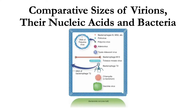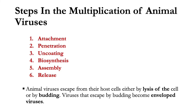This shows the comparative sizes of virions, their nucleic acids, and bacteria. The six steps in the multiplication of animal viruses are: first, attachment; second, penetration of the entire virion; third, uncoating where viral nucleic acid escapes from the capsid; fourth, biosynthesis where many viral pieces (nucleic acid and viral proteins) are produced; fifth, assembly, fitting the virus pieces together to produce complete virions; and sixth, release — the escape of the new virus out of the host cell.